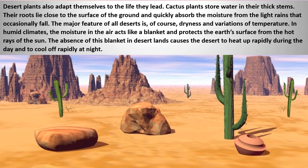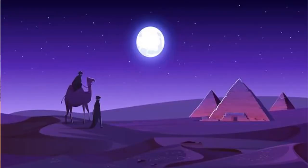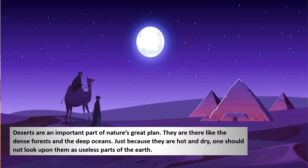The main features common for deserts include dryness and variation in temperature. In the case of humid climate, the moisture in the air acts like a blanket and protects the earth's surface from the hot rays of the sun. This is absent in deserts, causing them to heat up rapidly and cool off at night. Deserts are equally important as dense forests and deep oceans and we shouldn't underestimate them as a useless part of earth just because of their hot and dry nature.